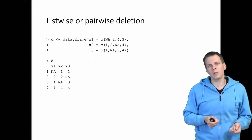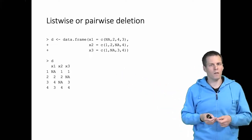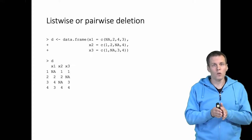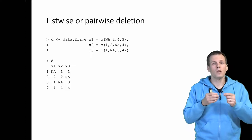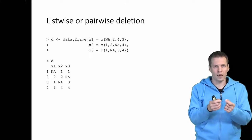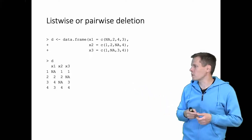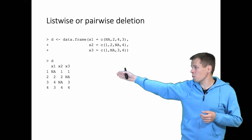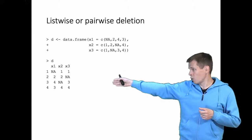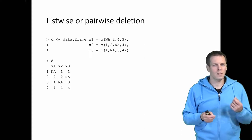It might be tempting to think there is something we can do. We can calculate the correlation between x1 and x2 using the second and fourth observations, which have complete data for that pair. We use this pair of observations — just those cases with complete data for each pair-wise combination. Then we take another pair for the correlation between x2 and x3, using the first and fourth observations, and for x1 and x3 we use the third and fourth observations. So we use different observations for different correlations and can calculate the correlation matrix, but this is potentially problematic.